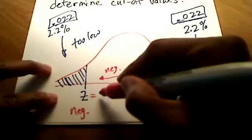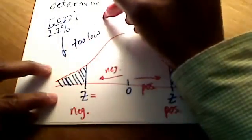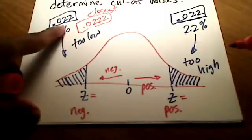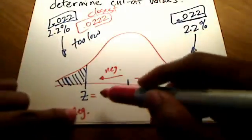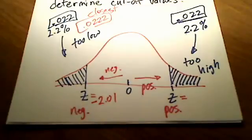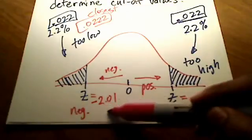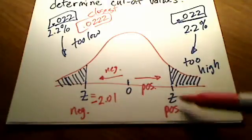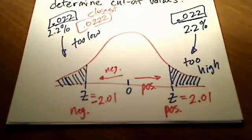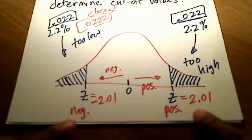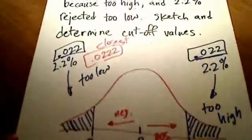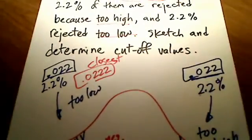According to the table, the closest value I could find to 0.022 was 0.0222, which gave me a corresponding z score of negative 2.01. So negative 2.01 is the negative cutoff score. The positive cutoff score is just the absolute value of that, which is positive 2.01. Any thermometer that gives a reading of 2.01 or higher, or negative 2.01 or lower, is cut off. These are the cutoff values — anything too high or too low.